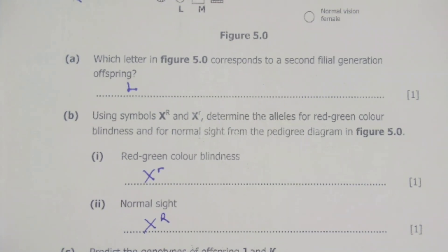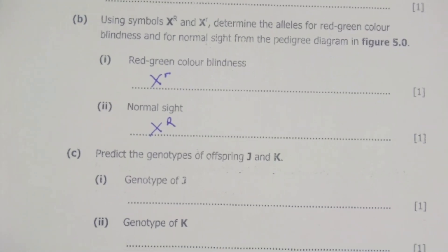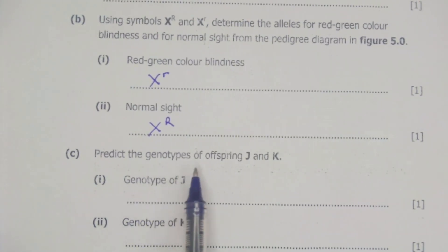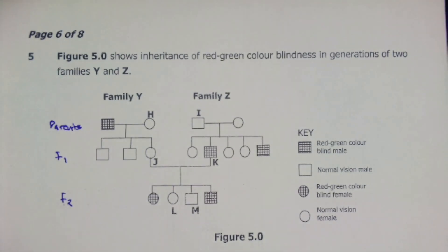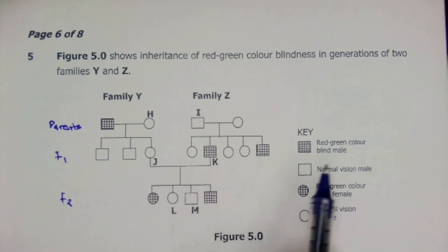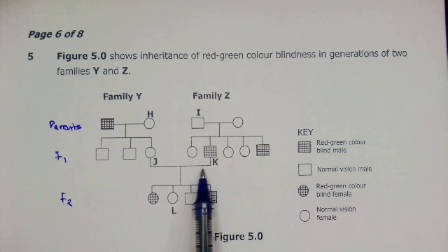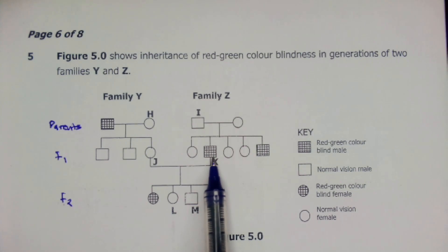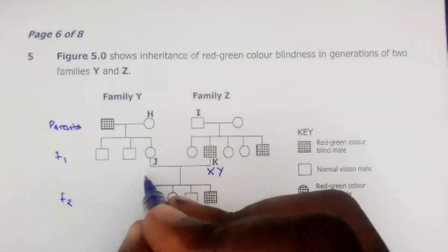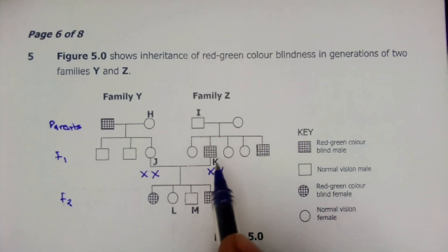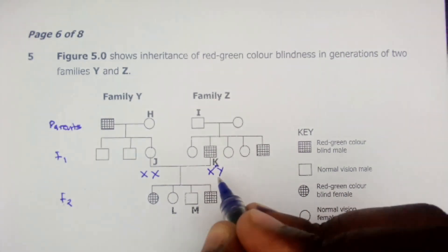The next question is C, which says: predict the genotypes of J and K. We go back to the pedigree diagram. We start with the shaded offspring because sex-linked traits mean a color blind male will always carry the recessive gene. So a color blind male will be X^r Y, and a color blind female will be X^r X^r. Since K is color blind, K has the recessive gene, written as X^r.